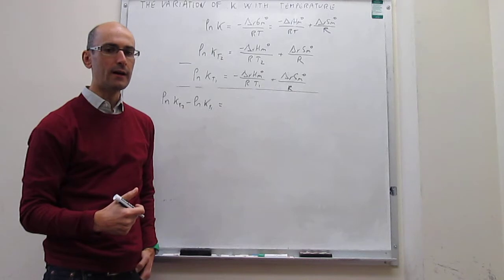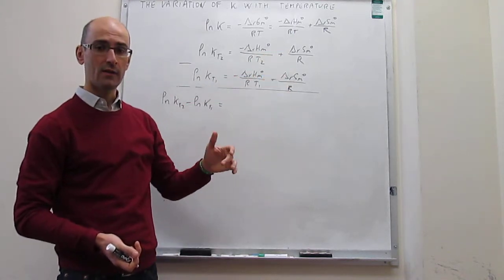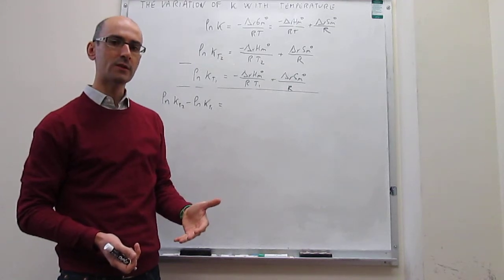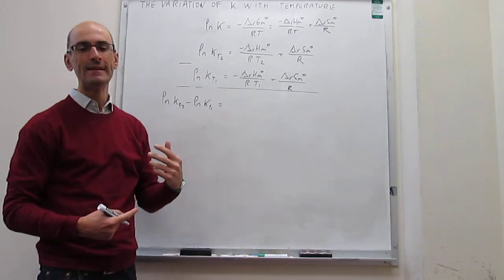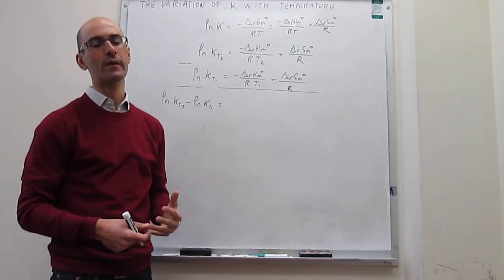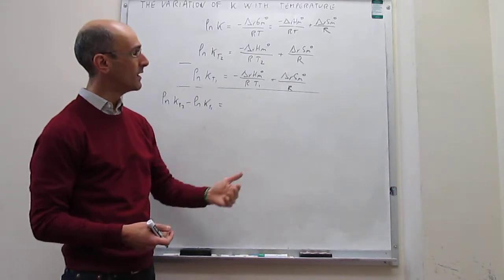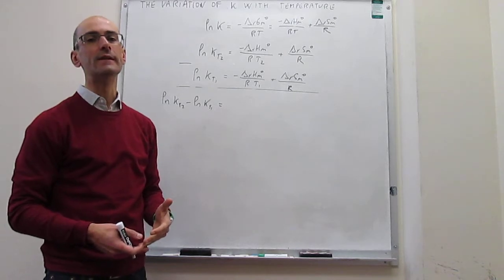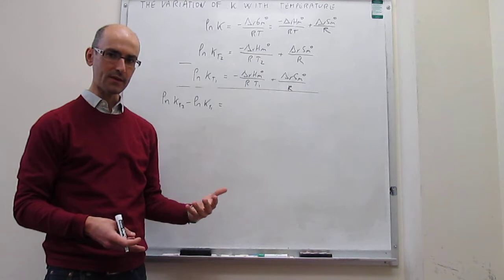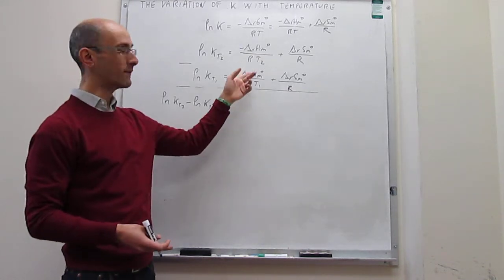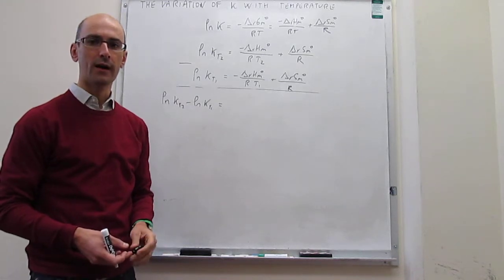Here we invoke an approximation that we need to discuss: the enthalpy of the reaction and the entropy of the reaction do not change with temperature. That approximation is generally not valid, but it becomes increasingly valid if the change in temperature — the difference between T₁ and T₂ — is small. When that temperature change is rather small, we can assume the change in reaction enthalpy and reaction entropy with temperature are not very large, so we consider them constant. For the purposes of this section, we always assume enthalpy and entropy of reaction do not change with temperature.